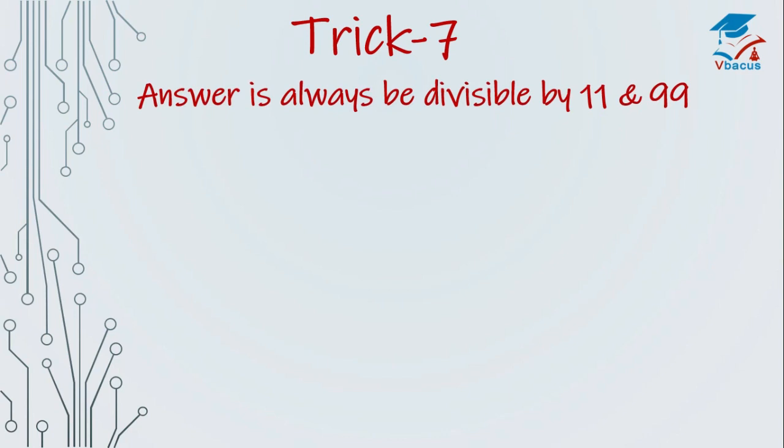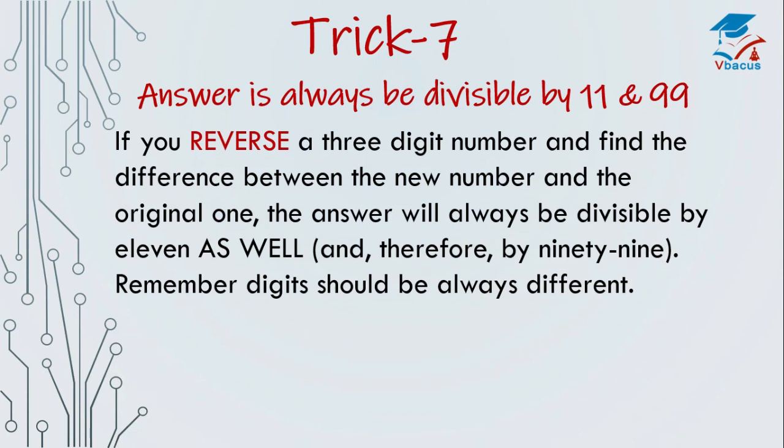Trick 7. Answer is always be divisible by 11 and 99. If you reverse a 3-digit number and find the difference between the new number and the original one, the answer will always be divisible by 11 as well and therefore by 99. Remember, digits should be always different. 432. Reverse of 432 is 234. Find the difference. That is 198. If you divide it by 11, your answer is 18. You can divide 198 by 99 also. It is 2. So you take any 3-digit number and reverse it. Find the difference. And you can divide that difference by 11 as well by 99.